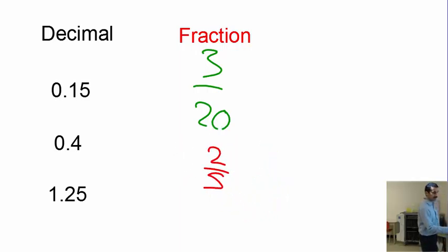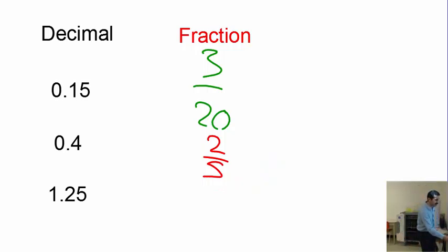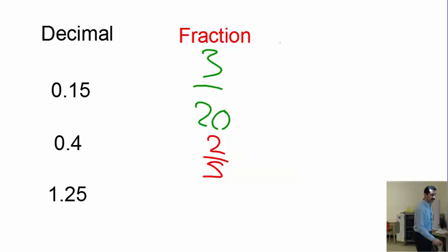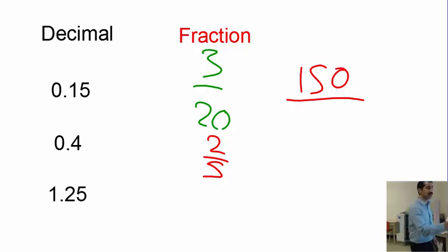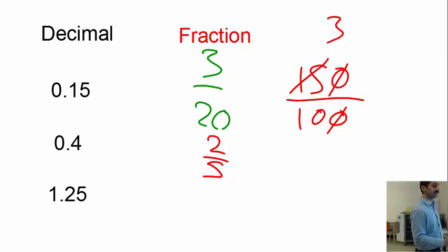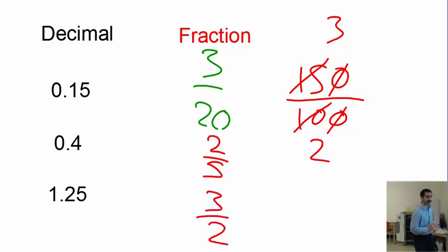Next: 1.25. Multiply 1.25 by 100 to get 125 — wait, that gives us 150 as the numerator? Let's write it: 150 divided by 100. Cancel the zeros, then both are divisible by 5: 150 ÷ 5 = 30 and 100 ÷ 5... simplifying gives us 3 over 2. So that's the answer: 3 over 2.